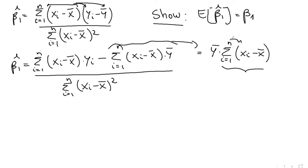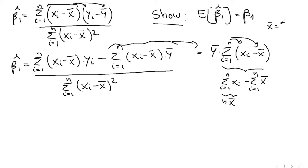Let's distribute the summation and see why. This summation equals the sum of xᵢ from i equals 1 to n, minus the sum of x̄ from i equals 1 to n. We know the sum of x equals n·x̄, because x̄ is defined as the sum of xᵢ divided by n. And here we're summing x̄ n times, which is also n·x̄. So we have n·x̄ minus n·x̄, which equals 0.